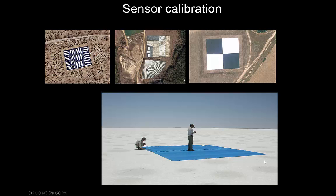In the bottom picture here you see a typical exercise in sensor calibration as it might happen in Australia, where a group of people from CSIRO goes out to a salt lake — Lake Frome probably — lays out a big tarpaulin, and waits for the sensor to pass over. They measure the spectral properties on the location and then compare those with what the satellite is measuring, and that's how we calibrate the sensor.